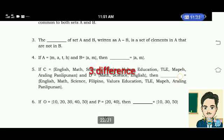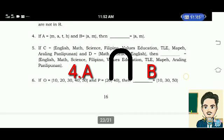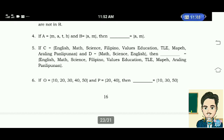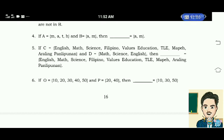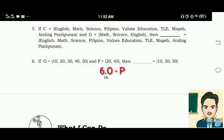Number 4: If A is equal to the elements M, A, T, H and B is equal to the elements A, M, then the blank is equal to the elements A, M. The correct answer is A intersection B. Number 5: If C is equal to English, Math, Science, Filipino, Values Education, TLE, Araling Panlipunan and D is Math, Science, English, then the blank is equal to English, Math, Science, Filipino, Values Education, TLE, Araling Panlipunan. The correct answer is C union D. Number 6: If O is equal to 10, 20, 30, 40, 50 and P is equal to 20, 40, then the blank is equal to 10, 30, 50. The correct answer is O minus P.